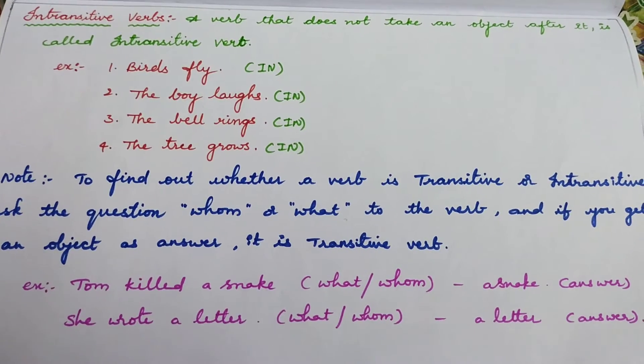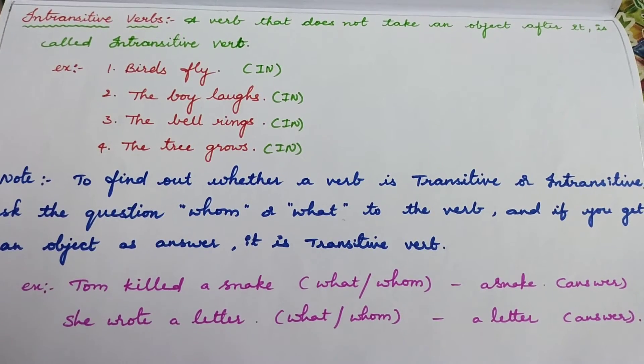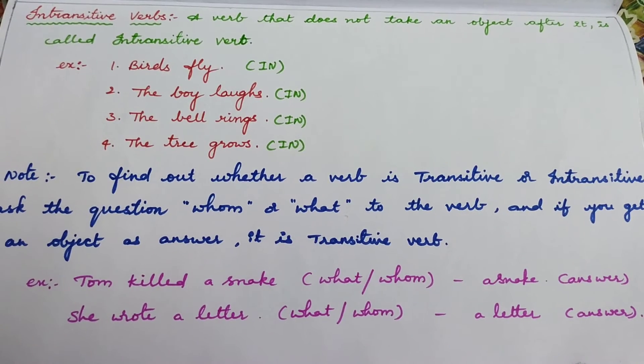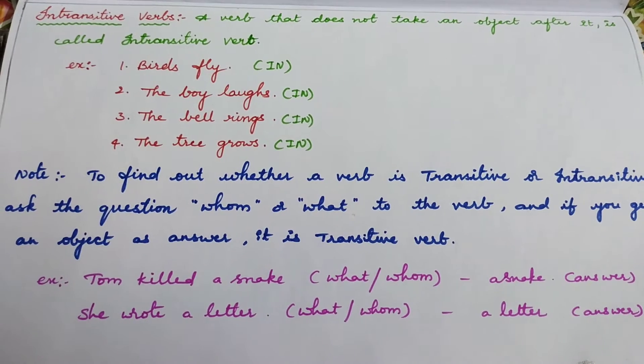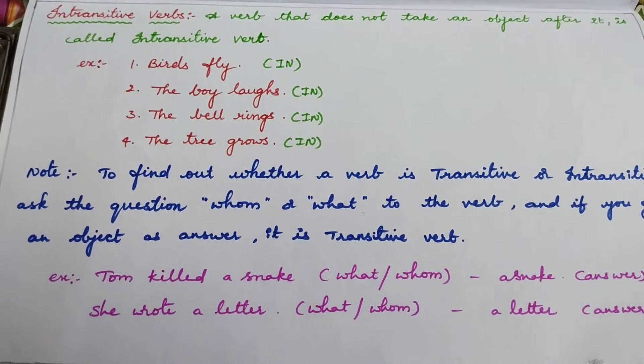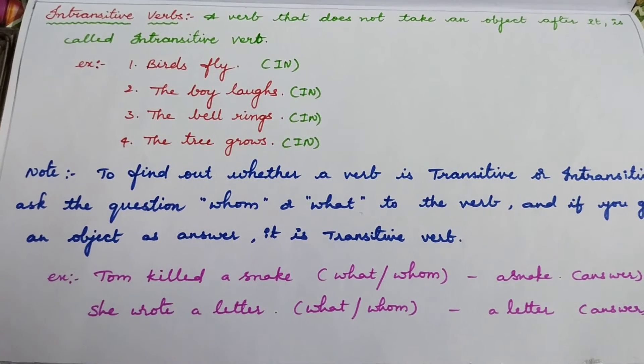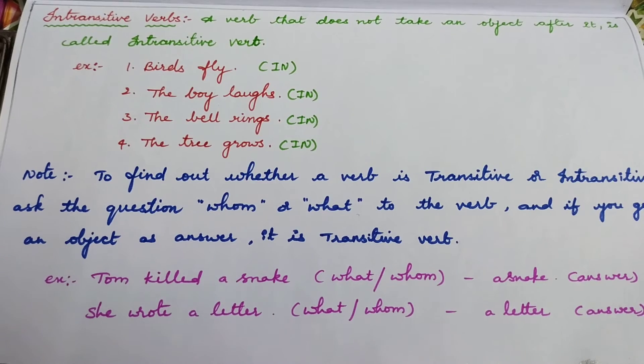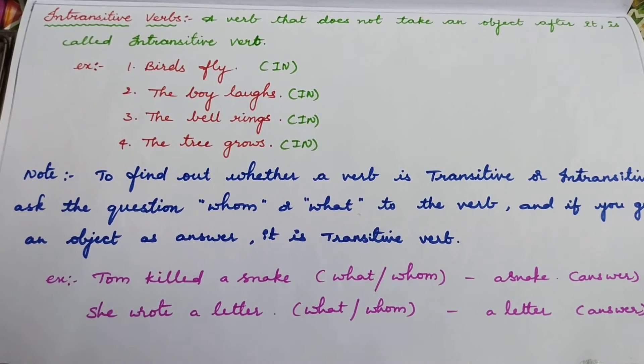Now, coming to intransitive verb. Intransitive verbs are quite opposite to transitive verb. Transitive verb transmits action from subject to object, that is, doer of the action to object. But here, intransitive verb doesn't transmit as it doesn't have an object itself.